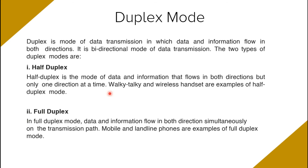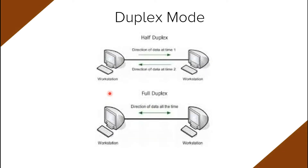Here is a simple diagram showing workstations linked via a transmission path. In half duplex, the first computer sends data to the second, and then the second sends back to the first. In full duplex, workstation one sends data to workstation two while workstation two simultaneously sends data back to workstation one — that is direction of data transmission operating simultaneously.